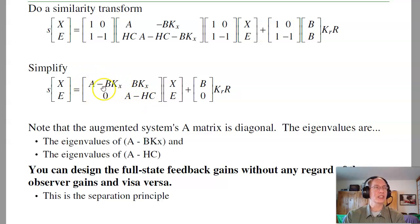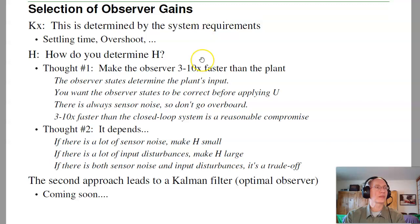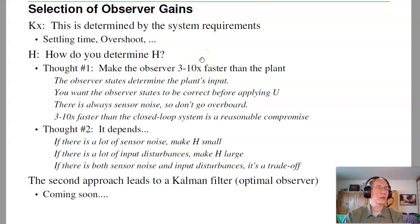You can design the feedback controller assuming — pretending — that all the states are measurable. You can design the state estimator, the observer, ignoring how you came up with the feedback control law. The observer doesn't care what the input is; it drives the states together regardless of the input. The observer will force the error to zero and force the state estimates to converge to the actual states. So really just treat the two as two separate problems.